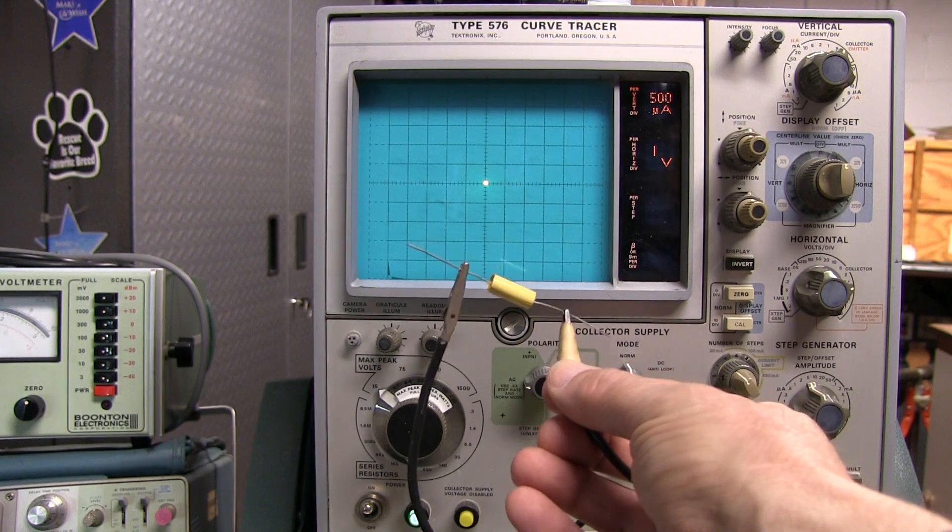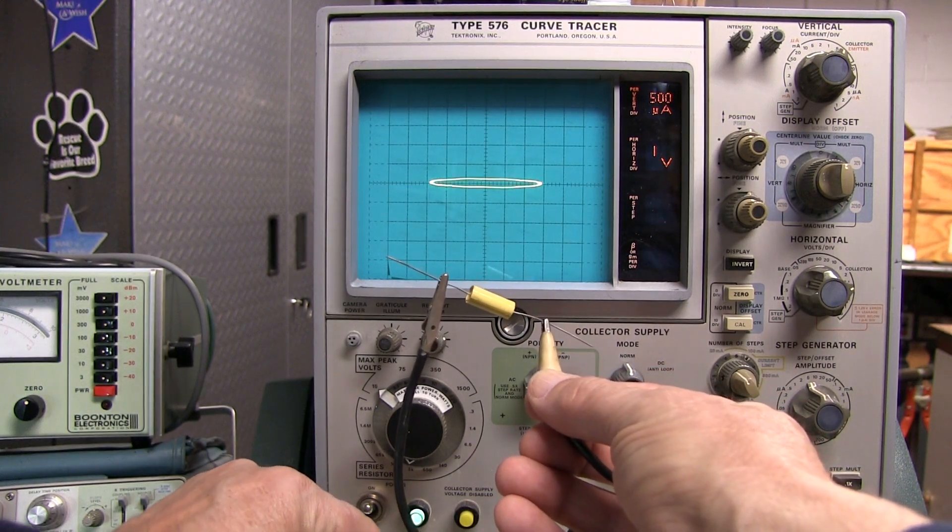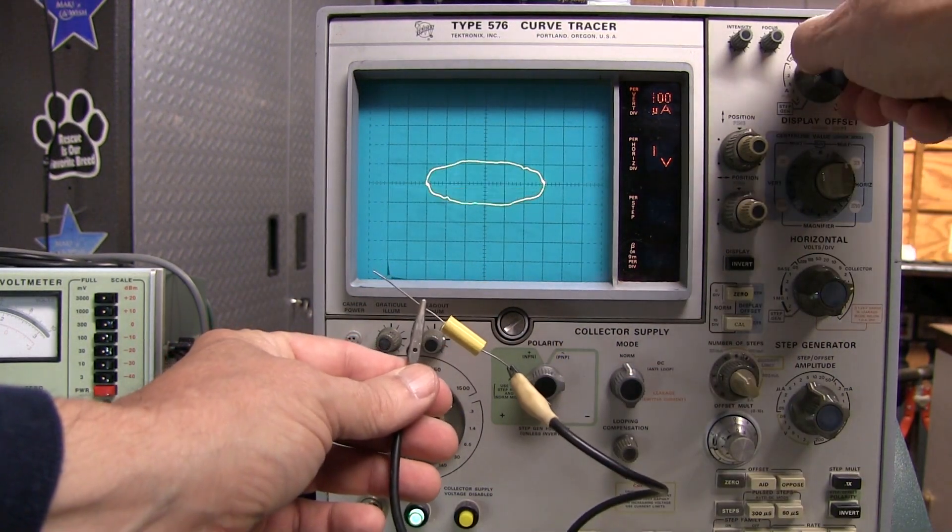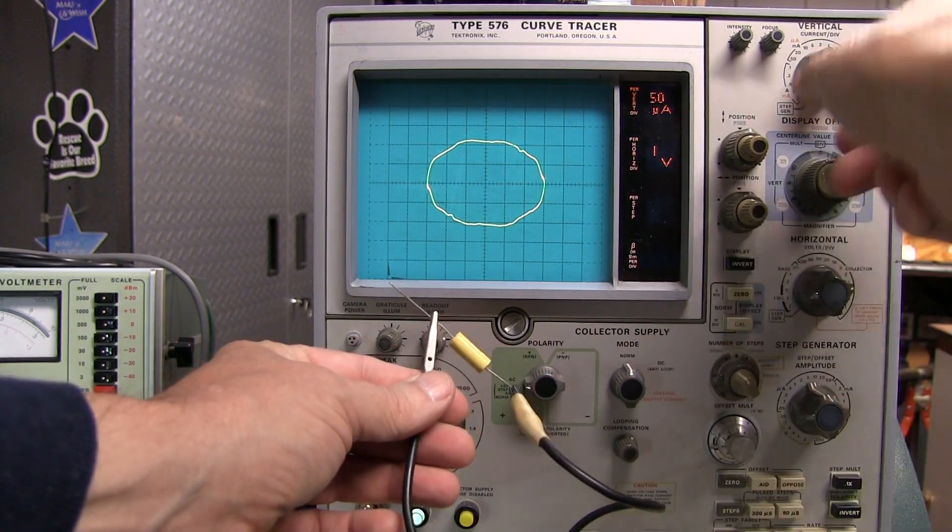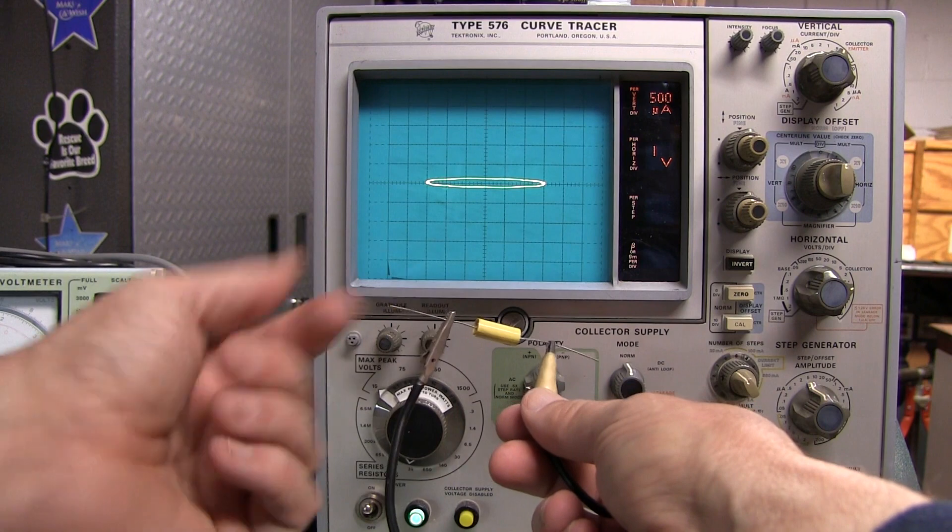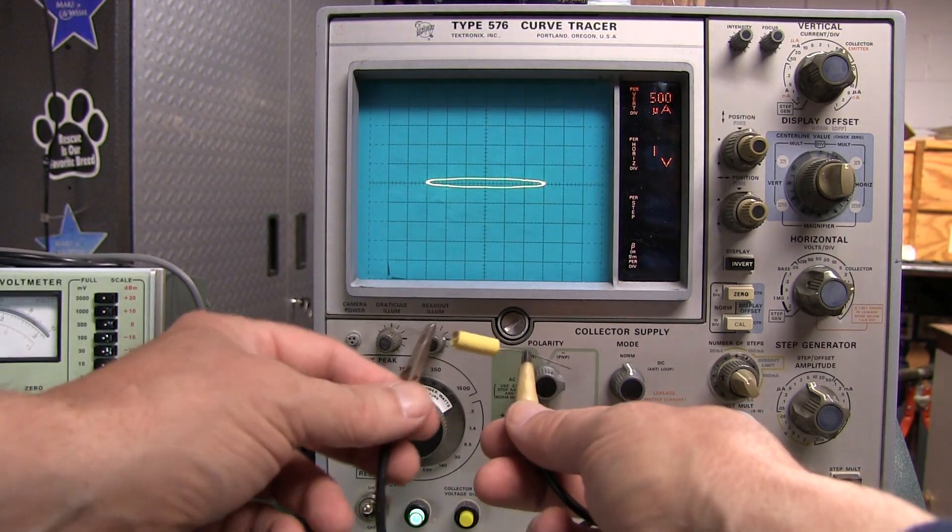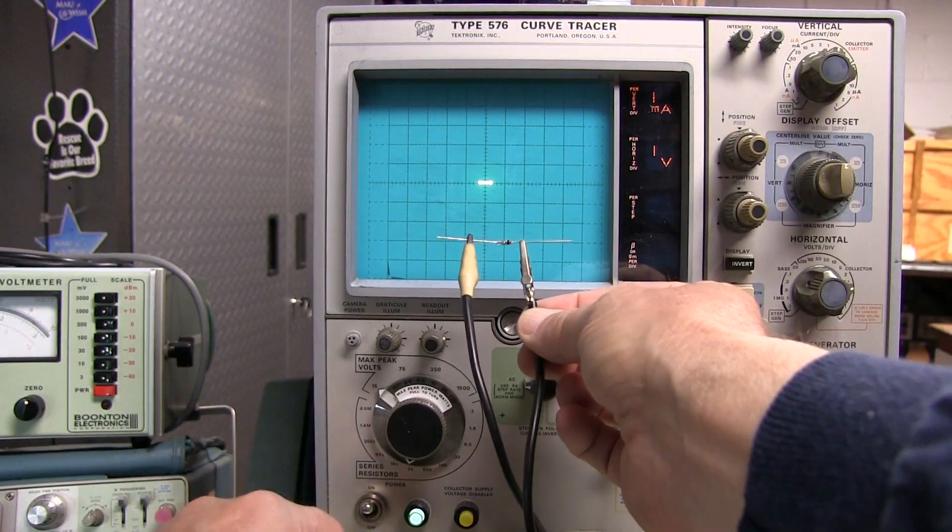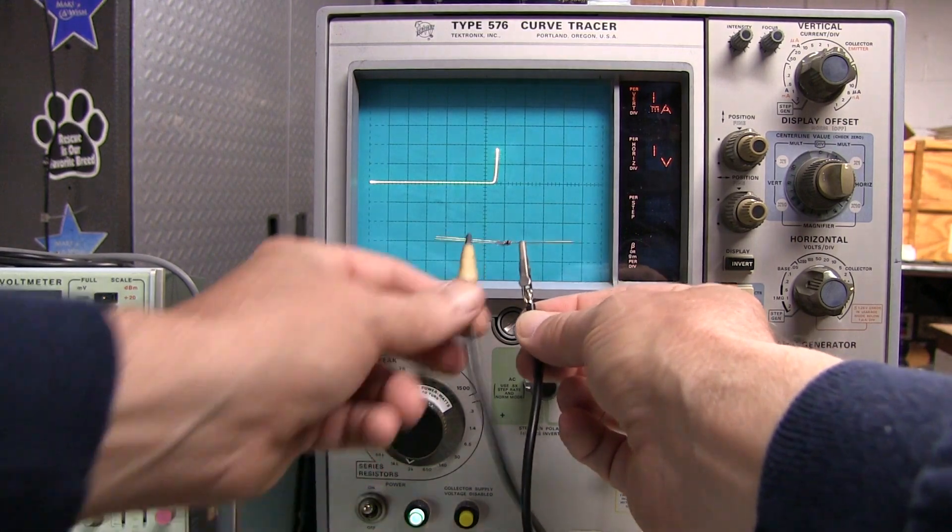Now with the capacitor, the voltage and current will be out of phase, so we're going to get an ellipse. And the shape of that ellipse is going to be a function of the capacitor value, because the curve tracer basically puts a 60 Hz signal across that capacitor. And of course, an ordinary diode is going to show your typical diode characteristic.